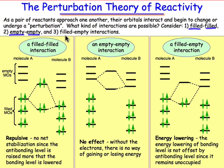And finally, what FMO theory will eventually lead us to is the prediction that what's most important is to consider orbitals that are filled on one partner, say those on A, with the orbitals that are empty on another partner. So orbitals that have electrons interacting with orbitals that are empty — those are the most important kind of interactions.